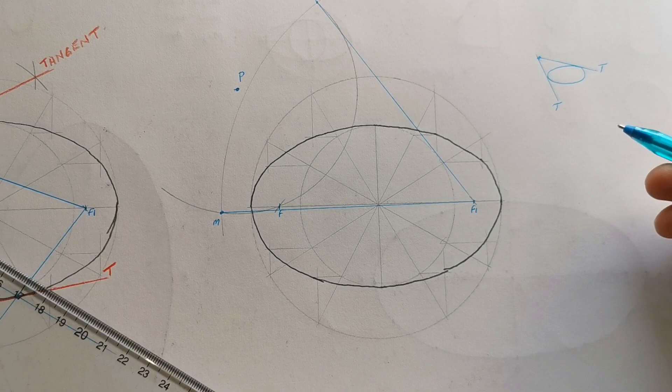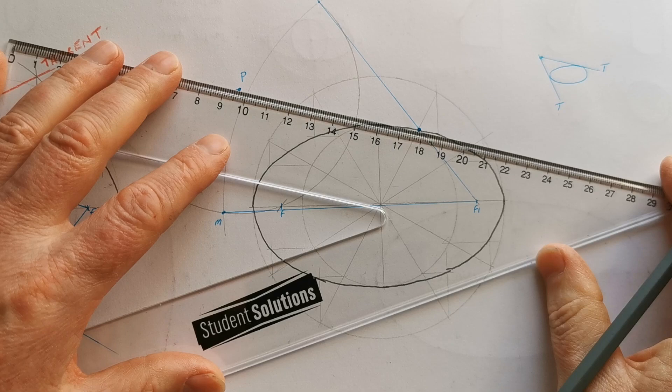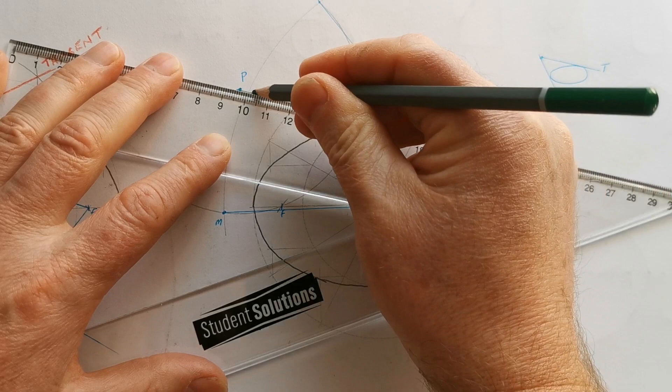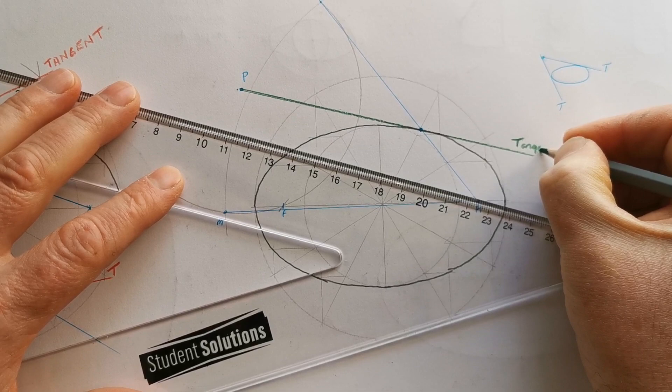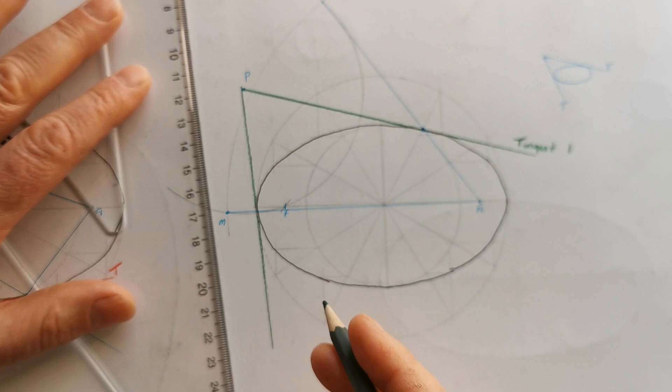So here is one tangent, and I'll draw them in green. So here is one tangent—just call that tangent one—and down here tangent two.